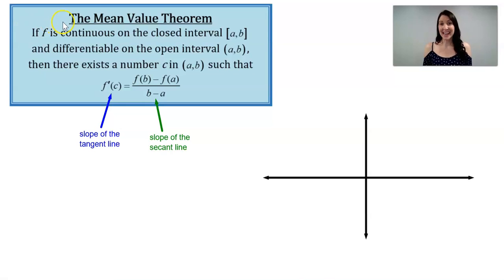The mean value theorem states if f is continuous on the closed interval [a,b] and differentiable on the open interval (a,b), then there exists a number c in the interval (a,b) such that f'(c) equals f(b) minus f(a) over b minus a.